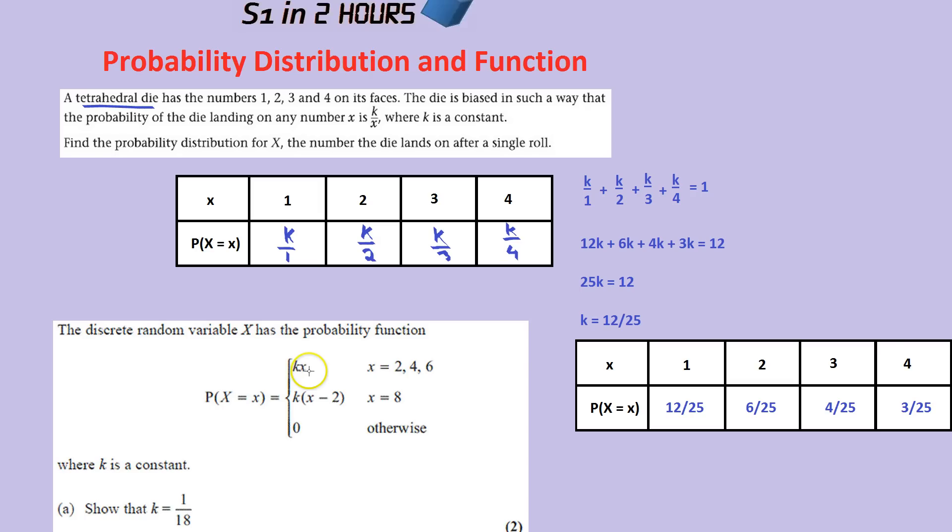Now, again, what do we know about probabilities? They always add up to 1. Let's put each of those 4 different options, 2, 4, and 6, into their respective groups, and find out what it equals. The 0 otherwise, you always have to include. Once you've run out of all your options, you write 0 otherwise. That just means any other option has 0 probability.